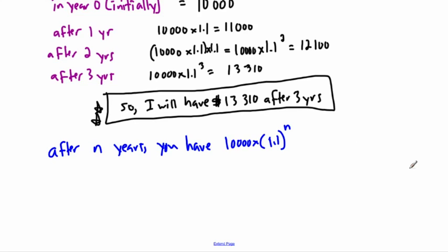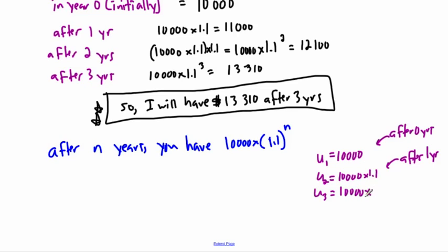Now, as a little side note, maybe we can sort of see this if we wrote it as a sequence. Let's say we just wrote it as U₁. Well, U₁ would be your initial amount, that would be 10,000. And that's basically, that's your amount after zero years. And then U₂, that would be 10,000 times 1.1. So that right there would be after one year. And of course, you'd have U₃, well, that would be 10,000 times 1.1 squared. That's after two years. And finally, U₄ would be 10,000 times 1.1 to the power of three, and that's after three years.